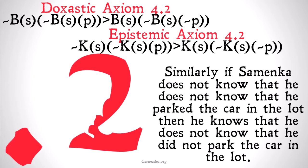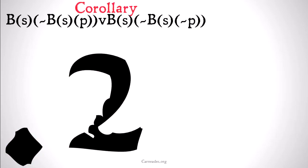Similarly, if Semenka does not know that he does not know that he parked the car in the lot, then he knows that he does not know that he did not park the car in the lot. Hopefully those make sense. Look at them again if you don't quite understand.